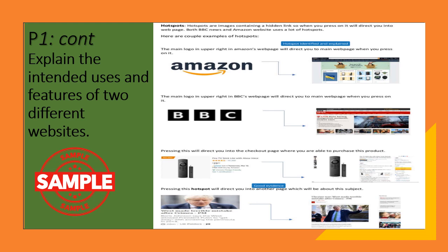This is different images of hotspots. Remember what your hotspots are? We went through this — they are images with hidden links. You need to explain this and also explain how they are used on both Amazon and BBC News.